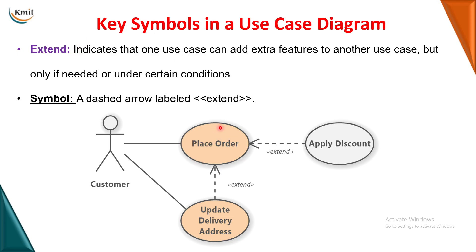The extends relationship is used when an action gives the user certain optional choices. For example, a customer placing an order can optionally apply a discount or update their delivery address — these are not mandatory. In extends, the arrow goes from the optional use case to the original use case — from 'apply discount' to 'place order.' Extends and includes are both given between use case and use case.